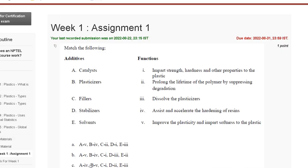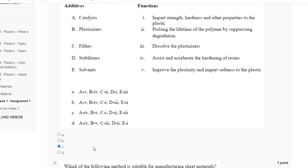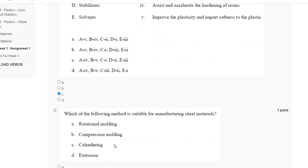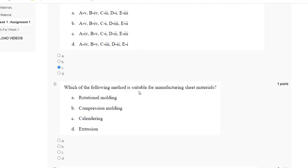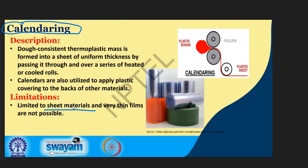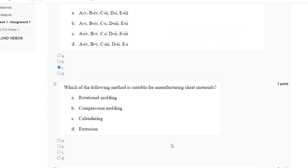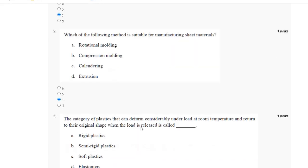Question number two: which of the following methods is suitable for manufacturing sheet material? Calendaring is used to make sheet material. The correct answer for question number two is C, calendaring.